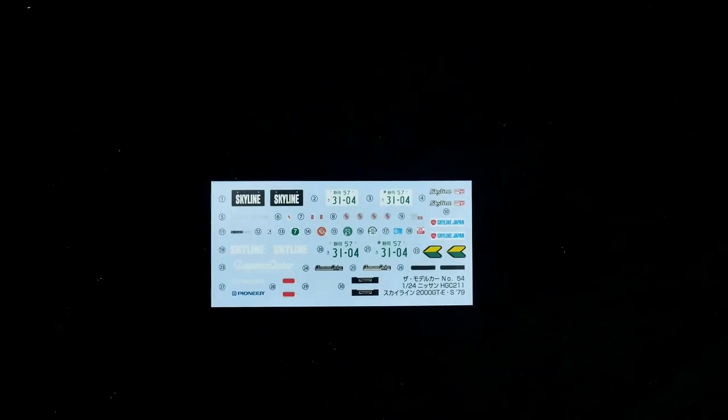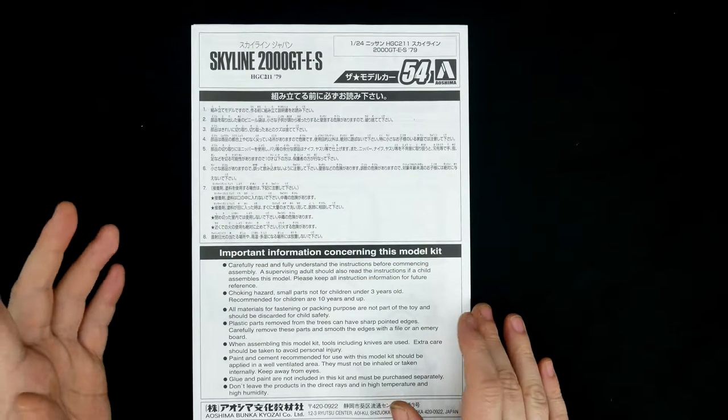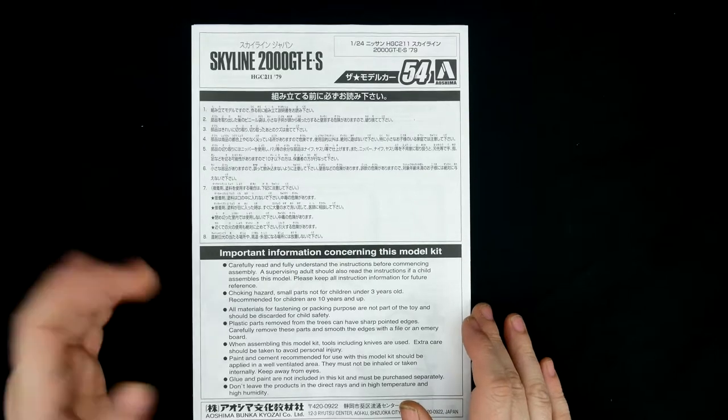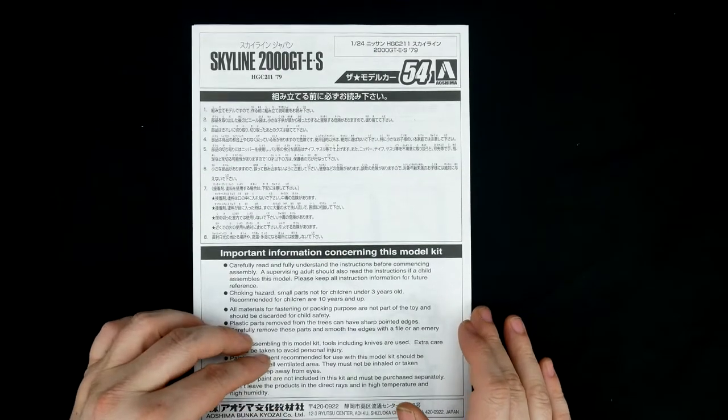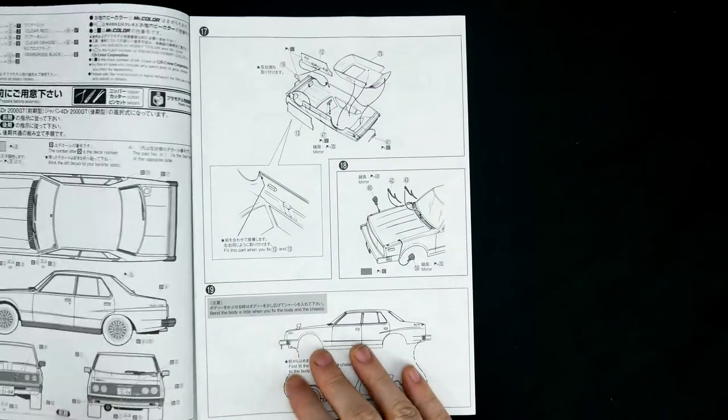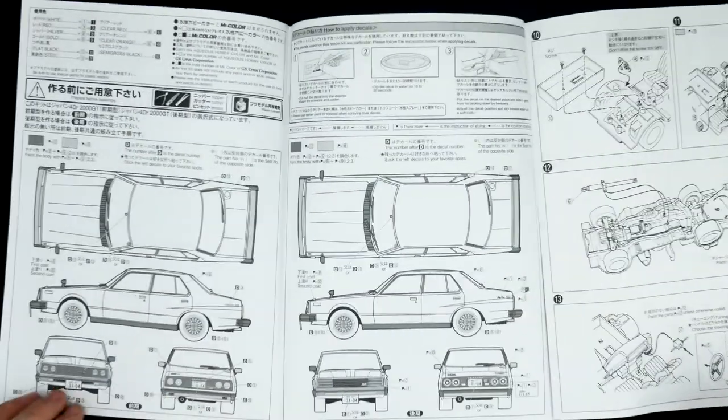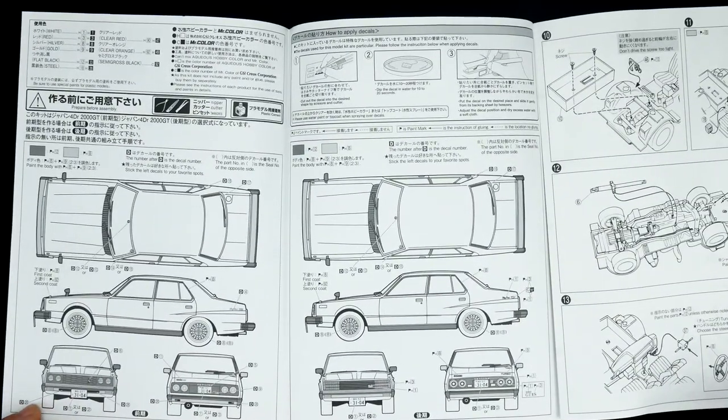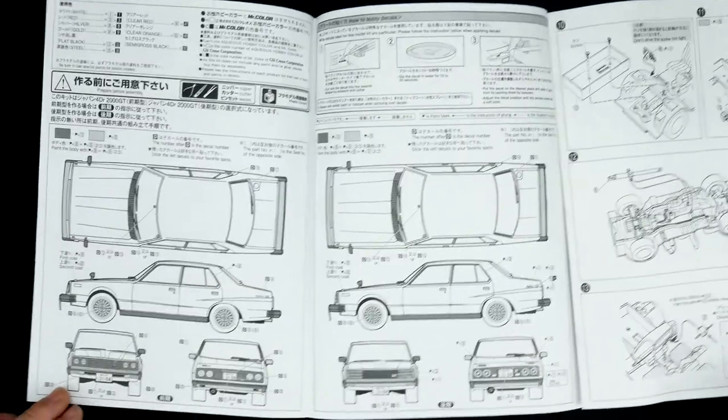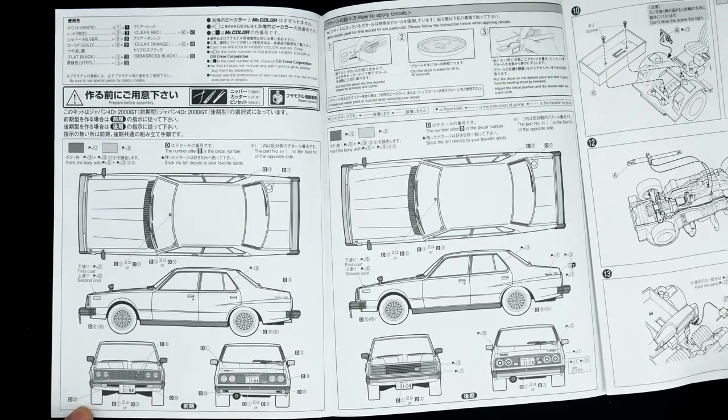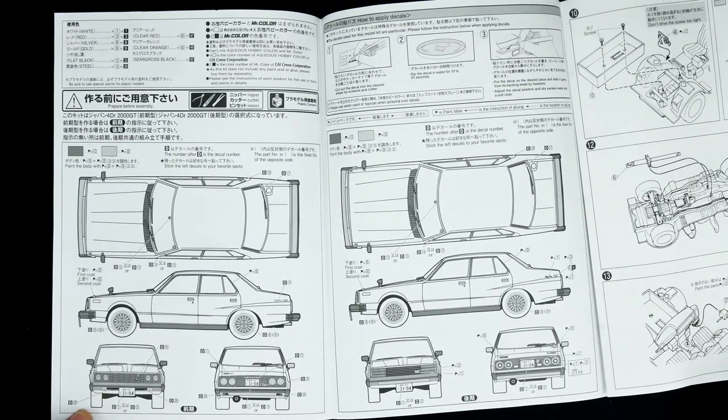And finally we'll take a look at the decal sheet. So that is going to do it for the Nissan Skyline 2000 GTES HGC211 for the 1979 model year. These are a couple of different variations that you can build with this kit.